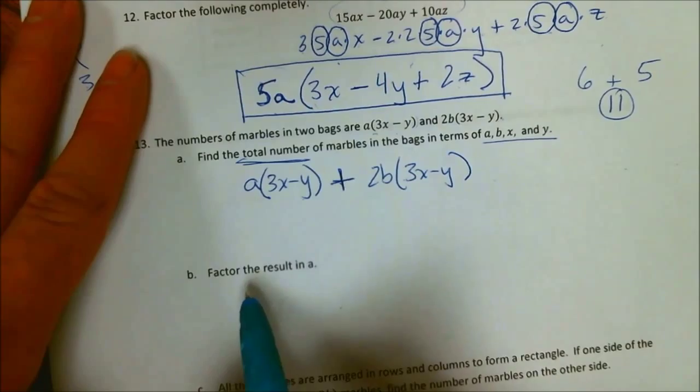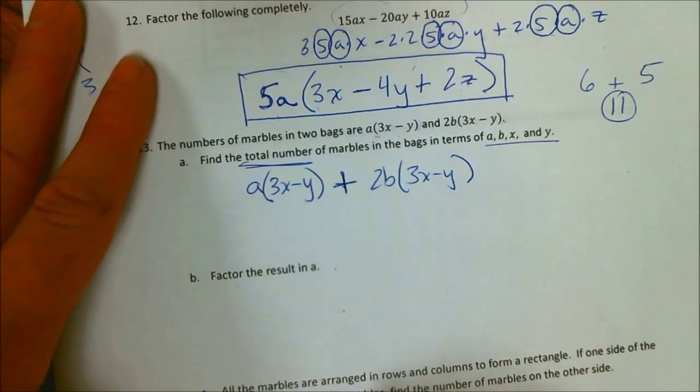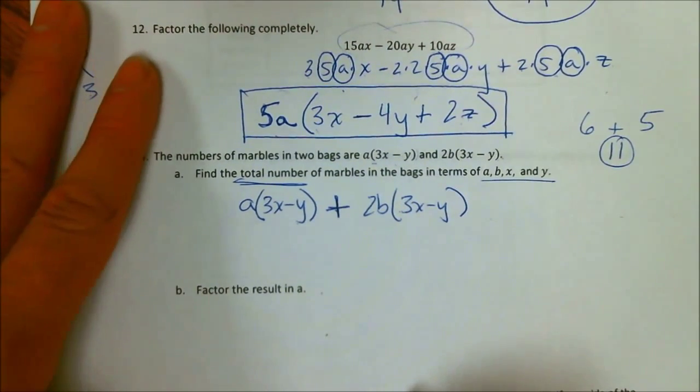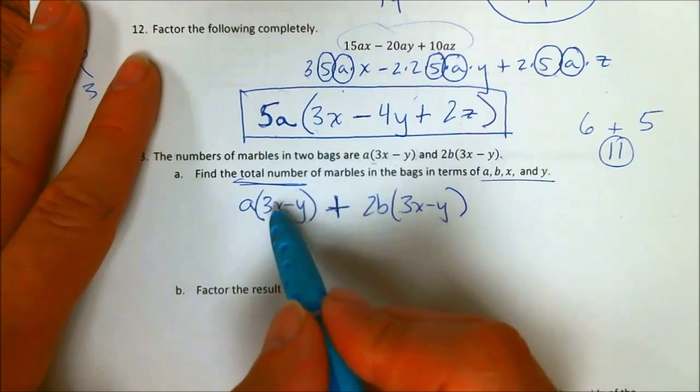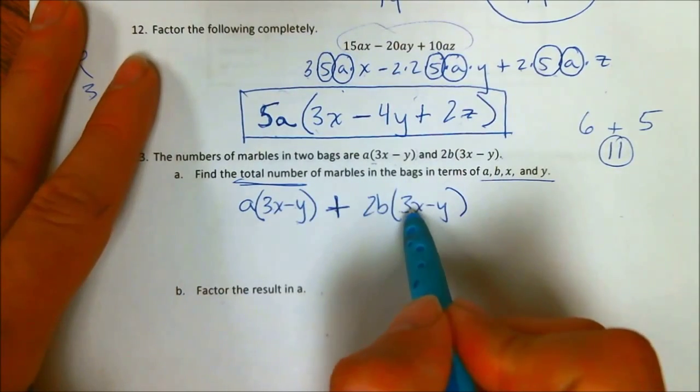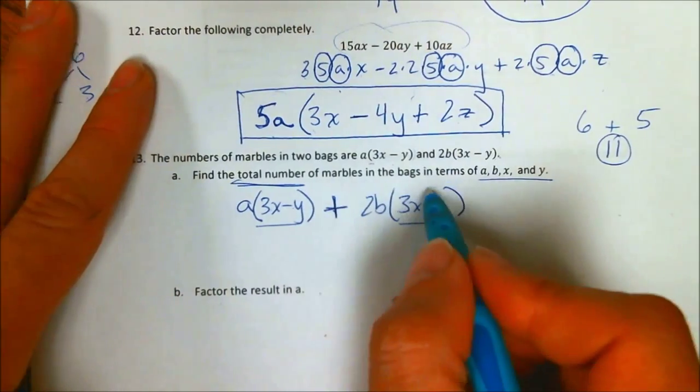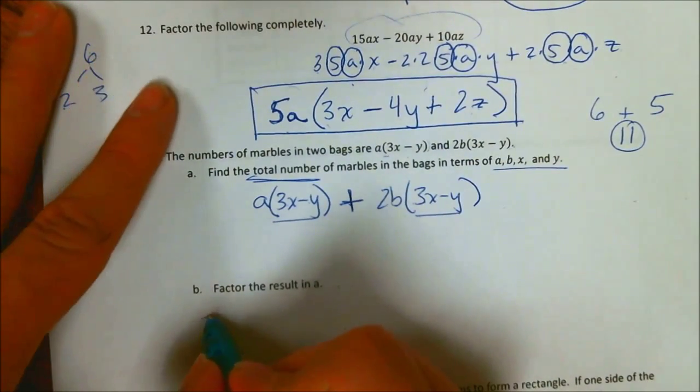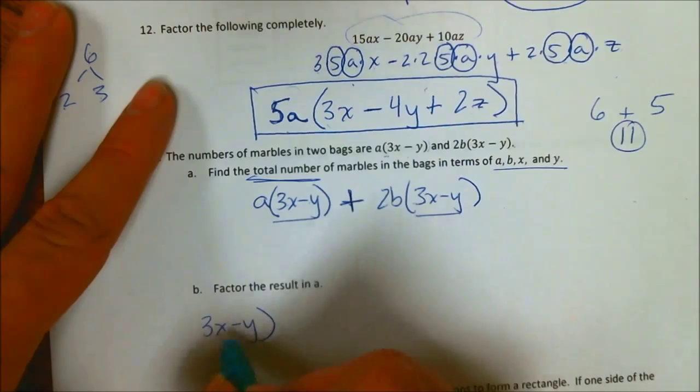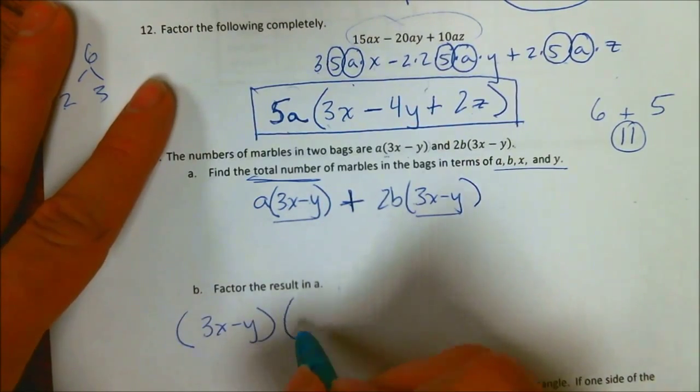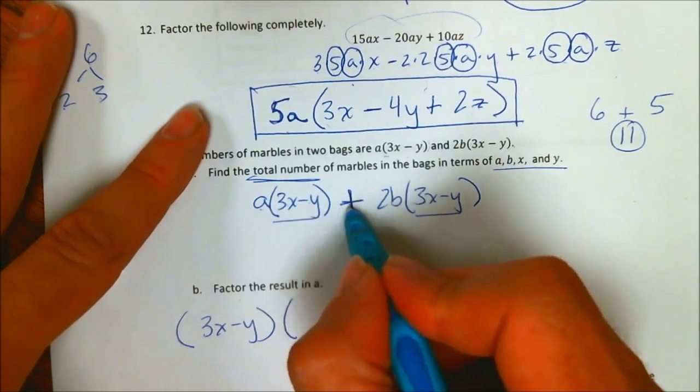Now, it says factor the result in part A. Well, we've been factoring for a little bit now, and we recognize that 3x minus y is a common term. I can pull 3x minus y out of both of these terms and put it in front. And what's left is A plus 2B.